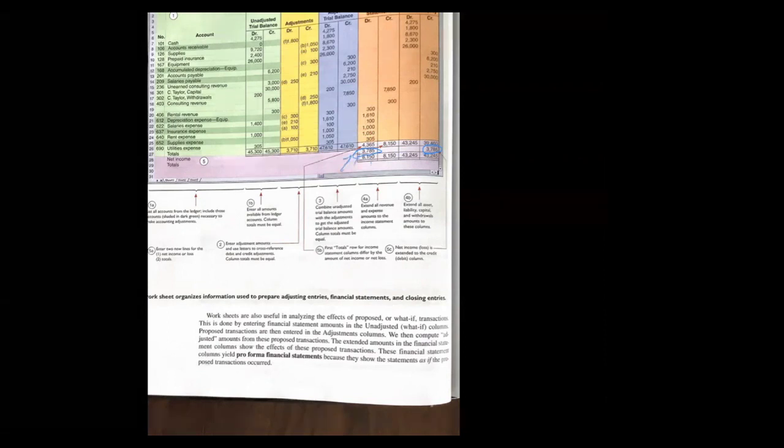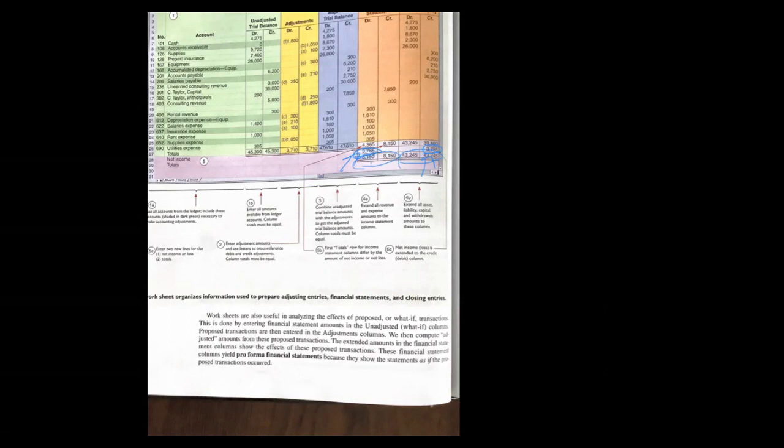I'm adding to the debit column of the income statement, and I'm adding the exact same number to the credit column of the balance sheet — that gives me the larger number. Because I'm adding to the debit column of the income statement, that's the net income when you prepare the financial statements.